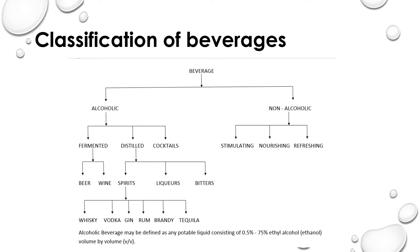Before learning about the classification of alcoholic beverages, let's classify beverages into two types: alcoholic and non-alcoholic. In non-alcoholic beverages, we have stimulating kinds which generally contain alkaloids and caffeine that stimulate the body. Next is nourishing beverages, which have a high amount of sugar content — generally fruit juices. Then there are refreshing beverages which include carbonated drinks.